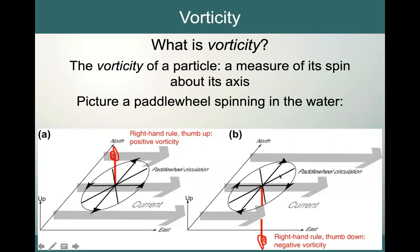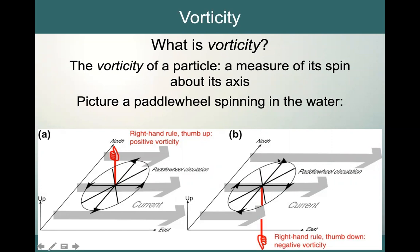Now let's look at figure B. In figure B, we have the opposite situation: a faster zonal velocity in the north and a slower zonal velocity in the south. In this case, we will have a spin in the opposite direction.